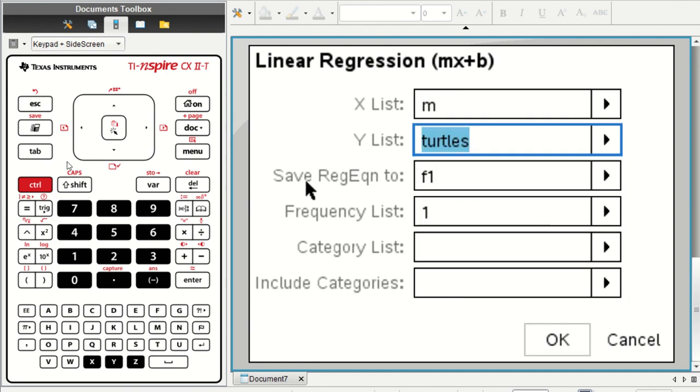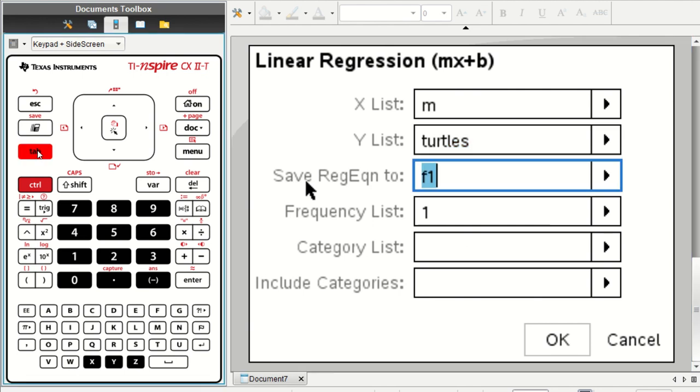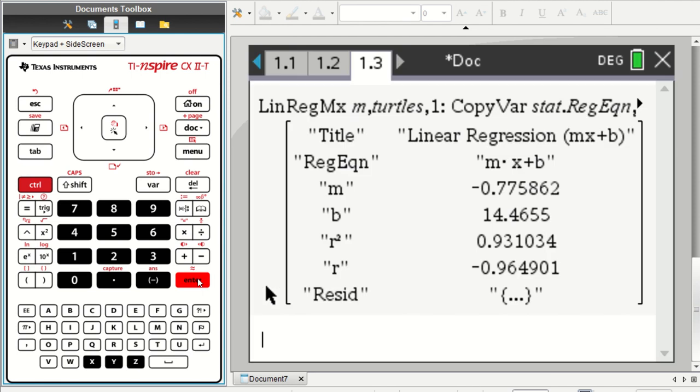And now I'm going to press Tab a bunch of times. I don't need to change this. It's going to save the regression equation as function F1. The frequency is just one. Each of the data items just appears one time, and we're not going to worry about categories. And here we go. So I can press Enter to do the calculation.